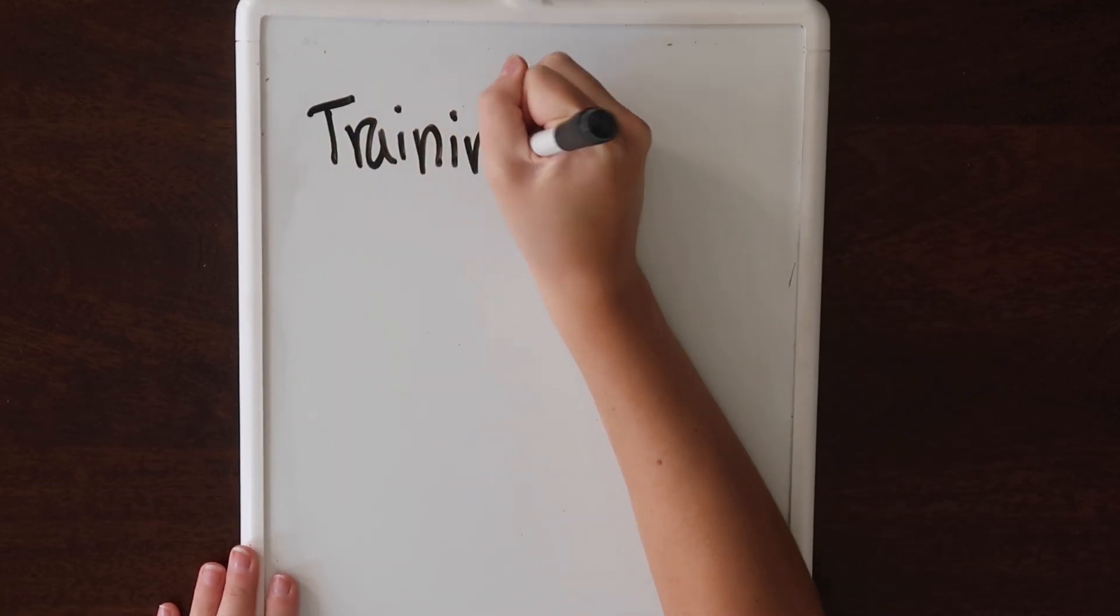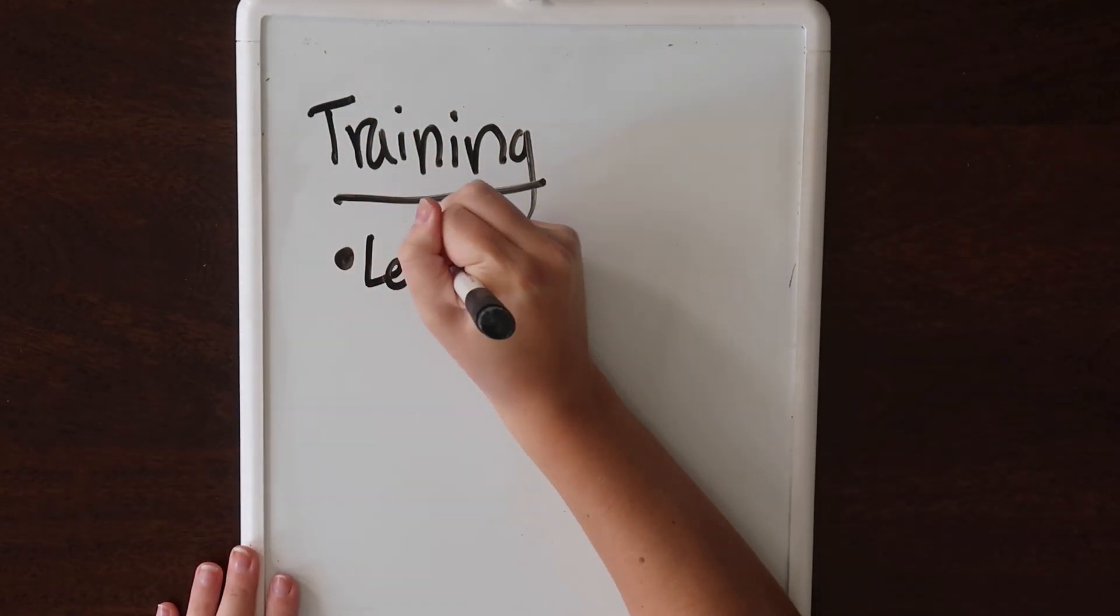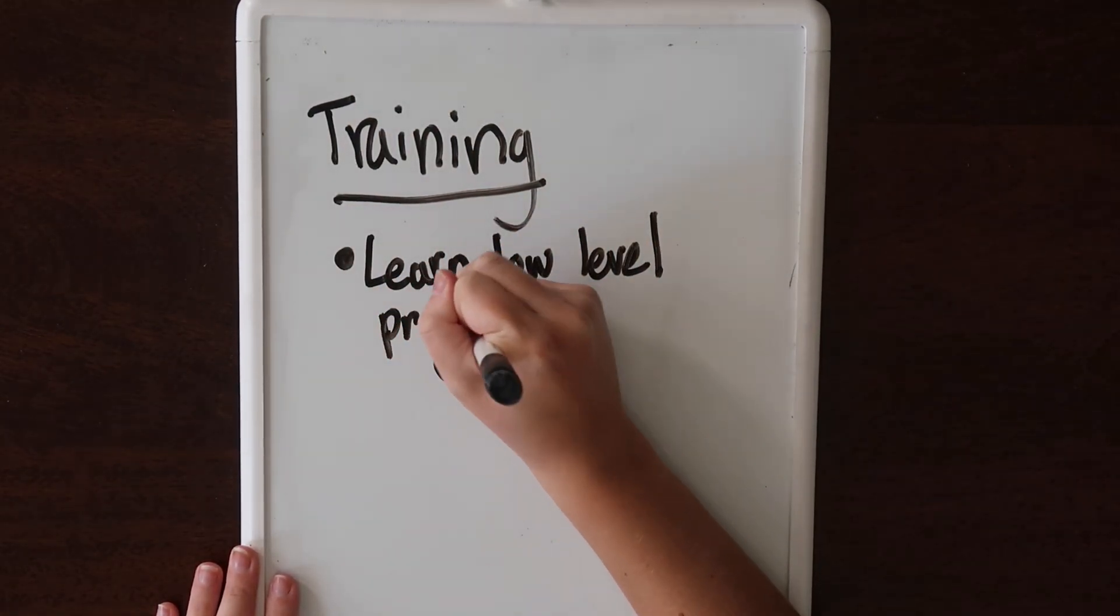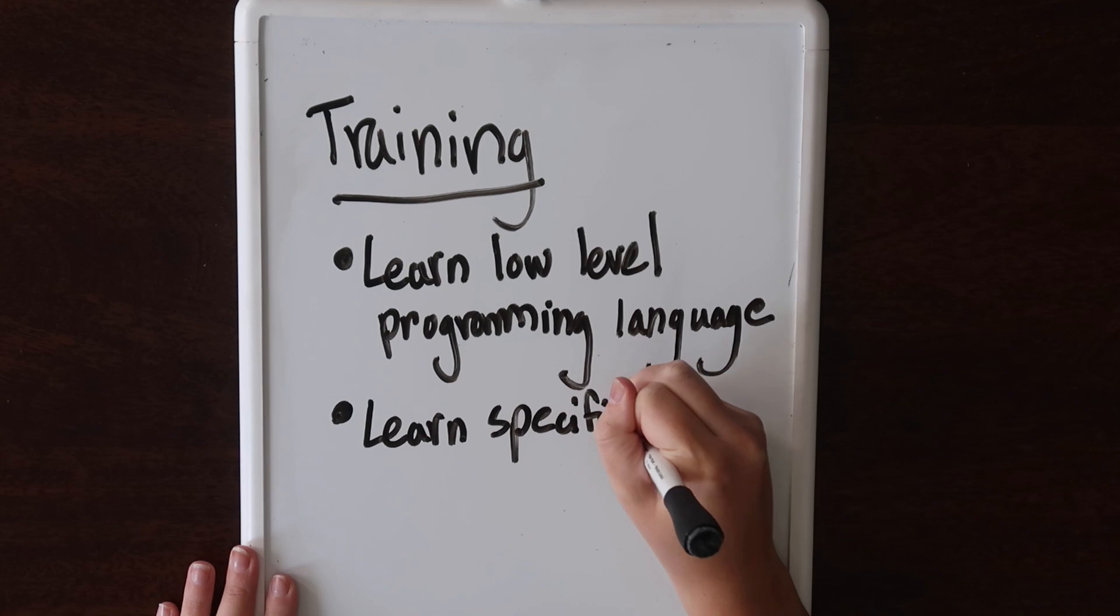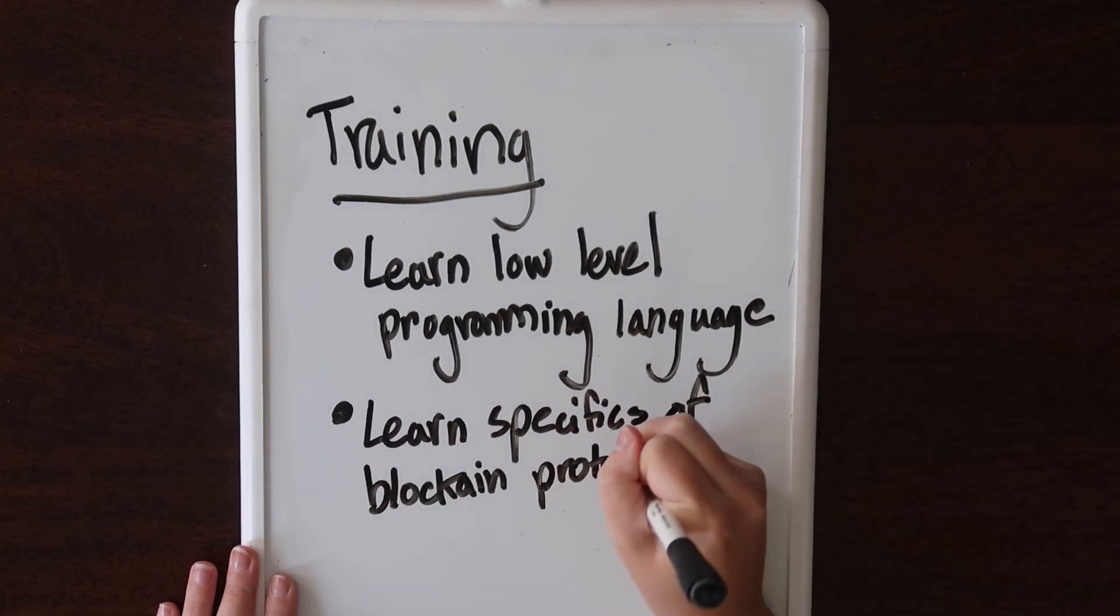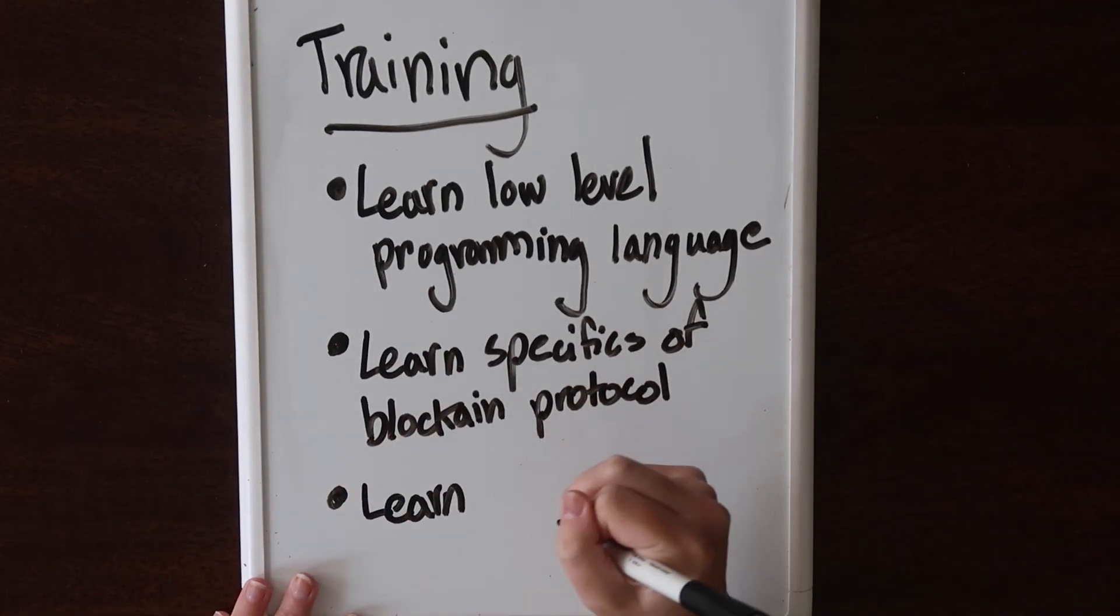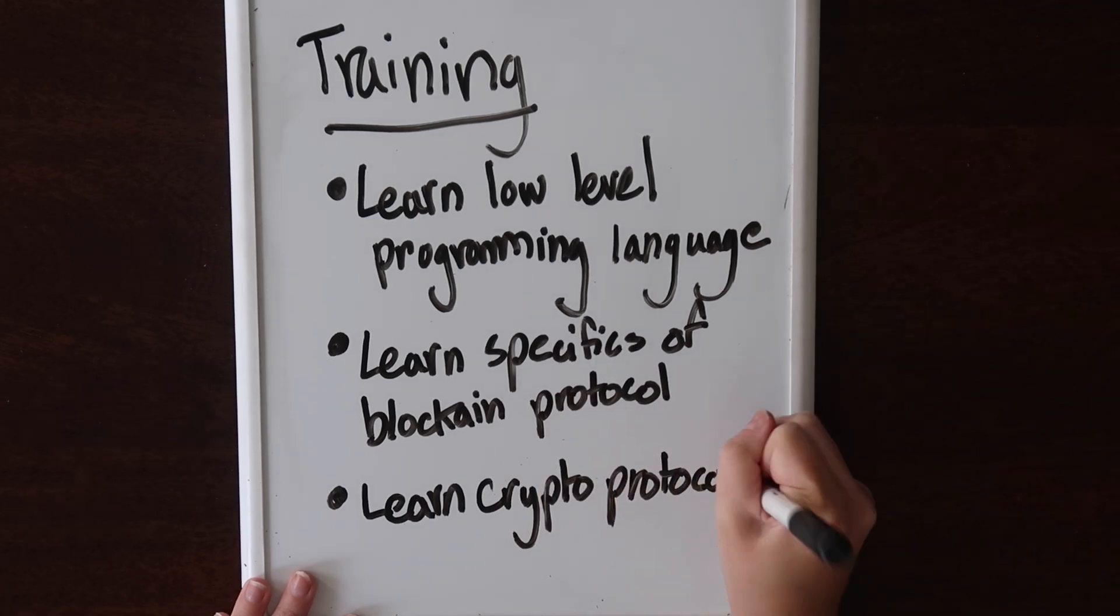It takes around a year of training before most developers feel comfortable building smart contracts. This training would include learning a new low-level programming language like Teal or solidity, developing a skill set that's only applicable to the blockchain protocol that the language supports, and understanding the limitations of each cryptographic protocol.